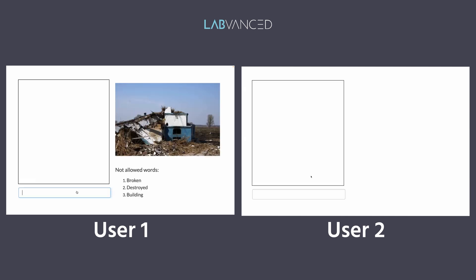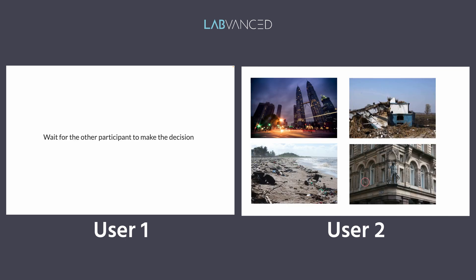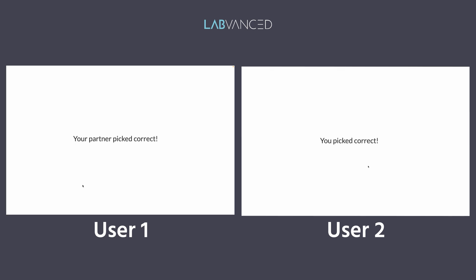In the task, the first participant sees an image and has 20 seconds to describe it in the chat. After that, the second participant sees four images and, based on the description they read, must select the correct image within three seconds.